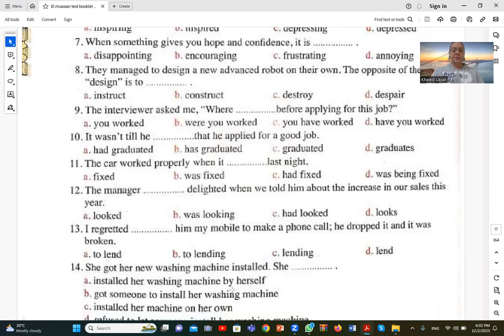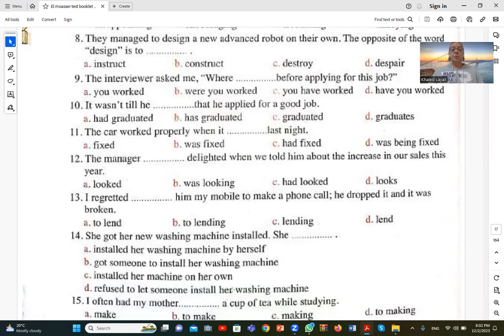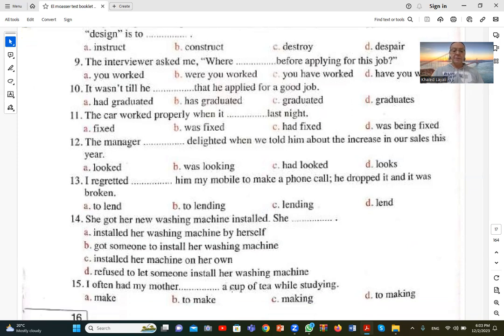Number fourteen. She got her new washing machine installed means she had someone install the washing machine for her. Got the washing machine installed means someone else installed it. The closest meaning is she got someone to install her washing machine. She asked someone to install her washing machine. B is correct.